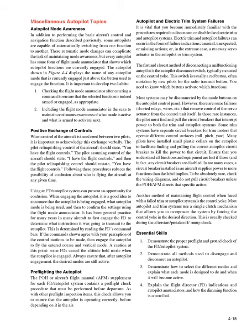Essential Skills: 1. Demonstrate the proper pre-flight and ground check of the FD/autopilot system. 2. Demonstrate all methods used to disengage and disconnect an autopilot. 3. Demonstrate how to select the different modes and explain what each mode is designed to do and when it will become active. 4. Explain the flight director (FD) indications and autopilot enunciators, and how the dimming function is controlled.